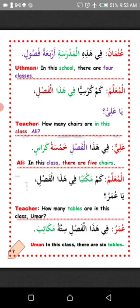La'alaka fahimt — I hope you understand. MashaAllah. Al-muallim — Teacher: Kam kursiyan fi hadha al-fasil? How many chairs are there in this class, ya Ali? Answer: Fi hadha al-fasil humsatu karasin — there are five chairs in this class. Kursiyun is mufrad, karasin is the plural form.